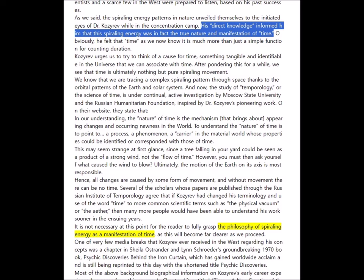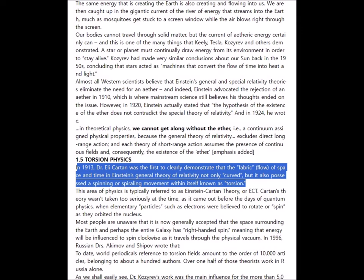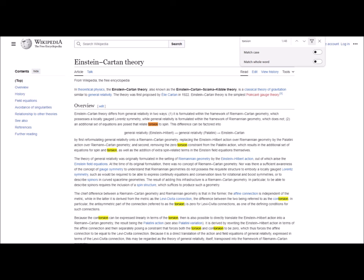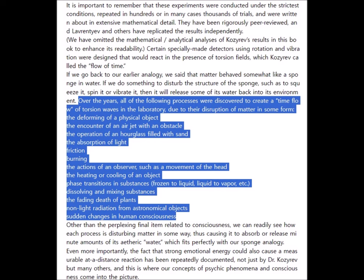Kozyrev envisioned time not as a static quantity but rather as a spiraling energy flow. Other names for it have been ether, torsion fields, or torsion waves. In 1913, Dr. Élie Cartan was the first to clearly demonstrate that the fabric or flow of space and time in Einstein's general theory of relativity not only curved but was also possessed of a spinning or spiraling movement within itself, known as torsion.